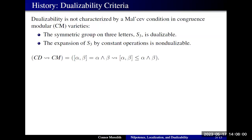We know that if the algebra generates a congruence distributive variety, then the commutator is the meet throughout the variety — the commutator has to be at least below the meet, and in congruence distributive varieties it is exactly equal to the meet. When you transition to a congruence modular variety, you suddenly get commutators that are lower than the meet. We can see this not just as a transition in the congruence lattices of our algebras, but in fact as an introduction of abelian intervals in our congruence lattices.